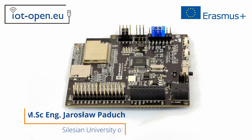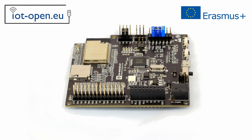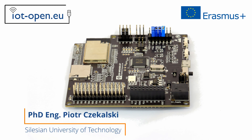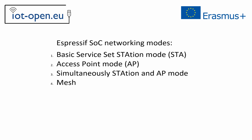Using Espressif system-on-chip devices, we can implement different wireless networking functions. Both Espressif chip ESP32 and ESP8266 families can use similar networking modes. As a Wi-Fi device, each Espressif system-on-chip can work in different networking modes, applying to Media Layer 1-3 of the ISO OSI model.